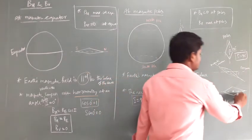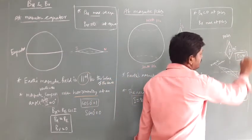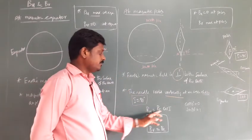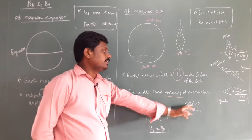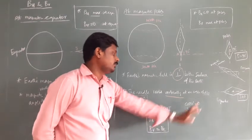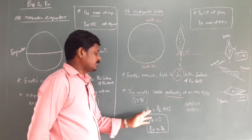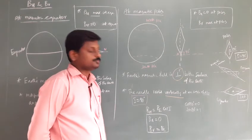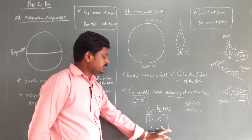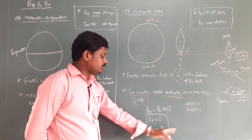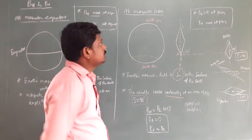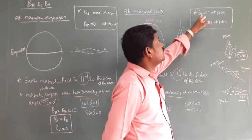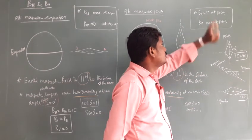I is equal to 0 degrees for the equator and I is equal to 90 degrees for the poles. So BH is equal to BE cos I — cos 90 is 0, so BH equals 0. And BV equals BE sin I — sin 90 is 1, so BV equals BE. Therefore, the horizontal component at the poles is 0.